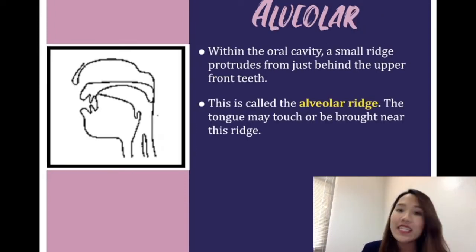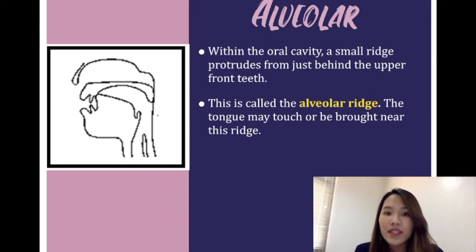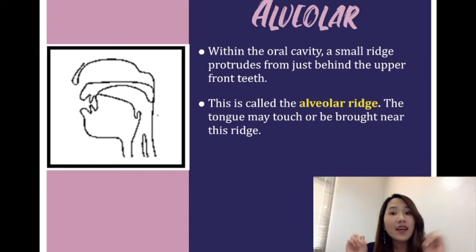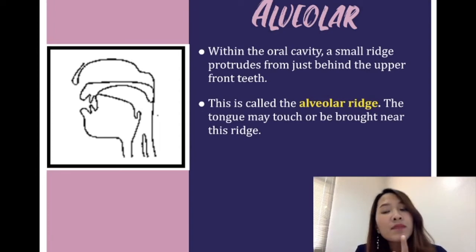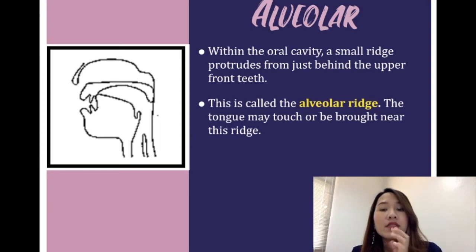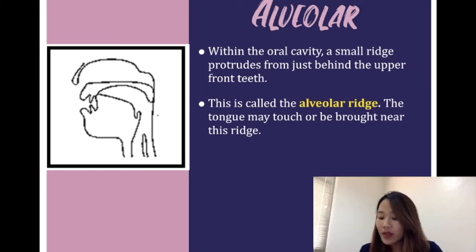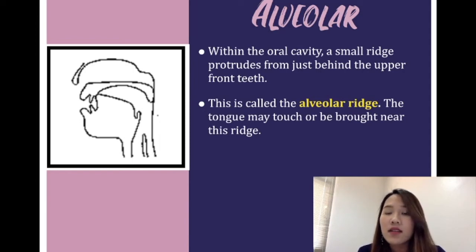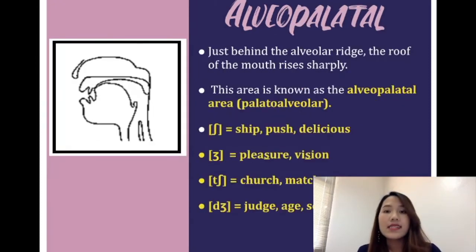The next place of articulation is alveolar. The alveolar is the small ridge just behind your upper front teeth — in Thai we call it 'ปุ่มเหงือก.' If you use your tongue to touch the area behind your upper front teeth, you can feel that small ridge, which we call the alveolar ridge. We use our tongue to touch that area and then make a sound. Sounds made from this area include /t/, /d/, and /n/ — for example the /d/ sound in 'dog.'